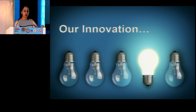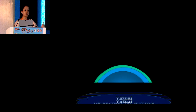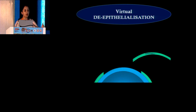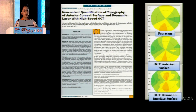So what was our innovation? The current modalities which locate the stromal topography actually involve an invasive procedure of intraoperative epithelial deprivation and then looking at the stromal surface, which has been published by Gatinell et al. What we did was develop a method to virtually de-epithelize in a non-invasive way. This has already been published by our group, and I'm going to look into the various applications of this in refractive surgery and cross-linking.